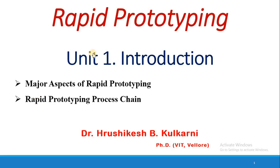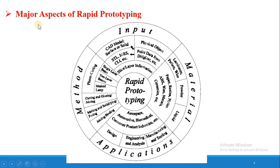Hello dear learners, welcome to video lectures on the subject Rapid Prototyping. In this session we are going to discuss major aspects of Rapid Prototyping and the Rapid Prototyping process chain. Rapid Prototyping has 4 major aspects: input, materials, application, and method. Now let's discuss the first major aspect, that is input.